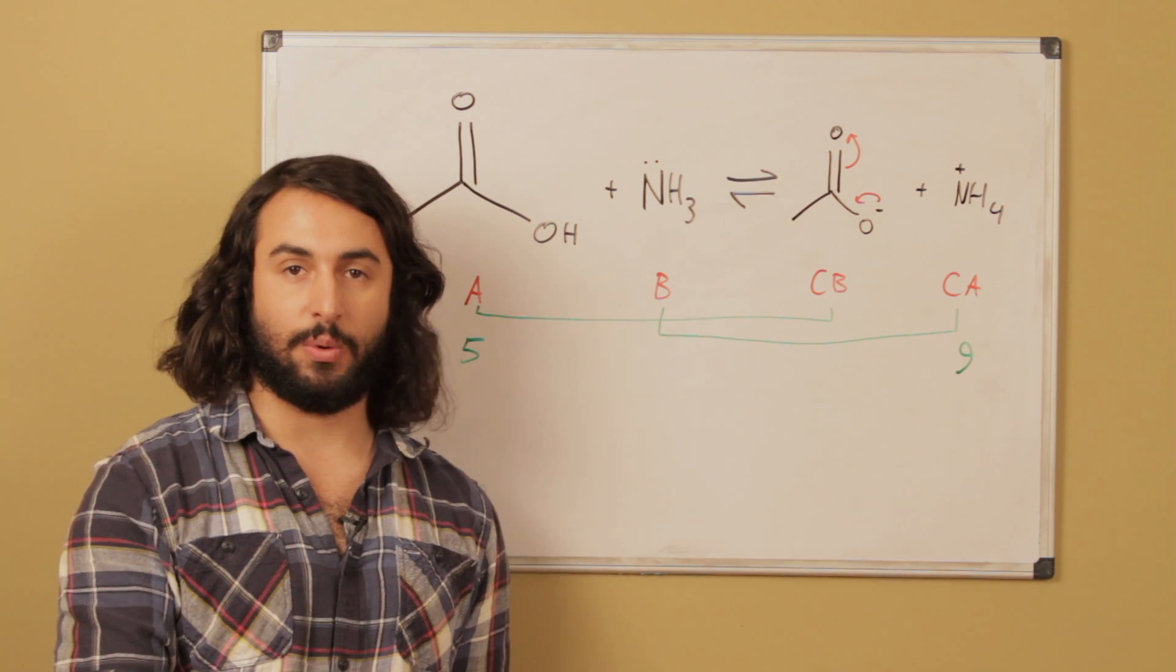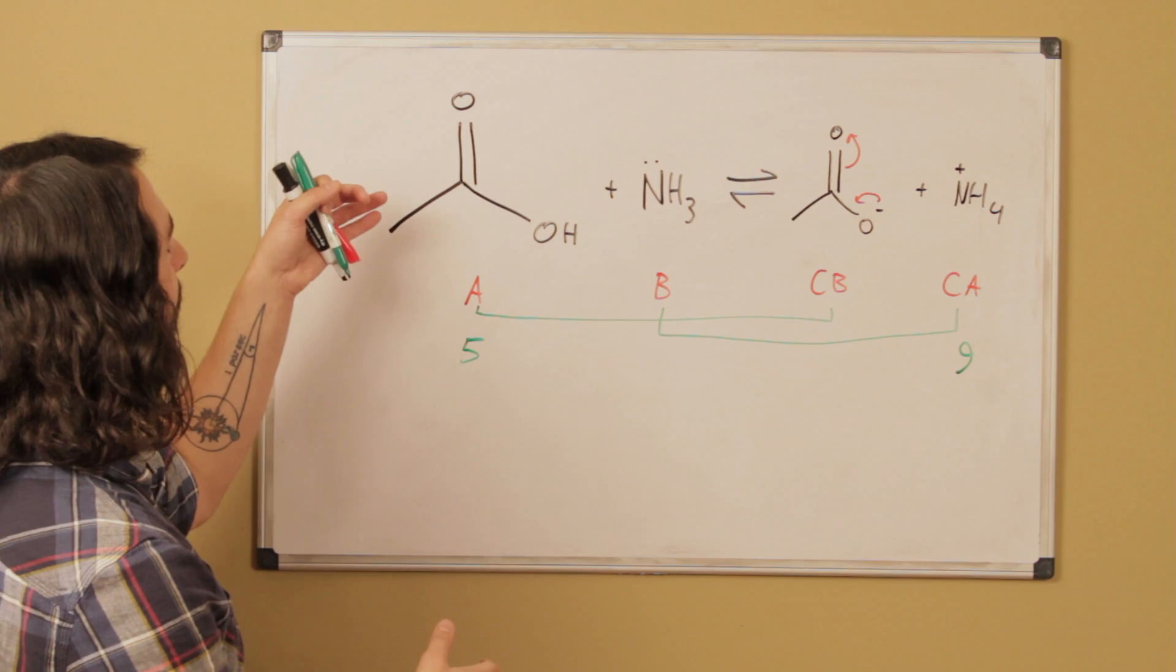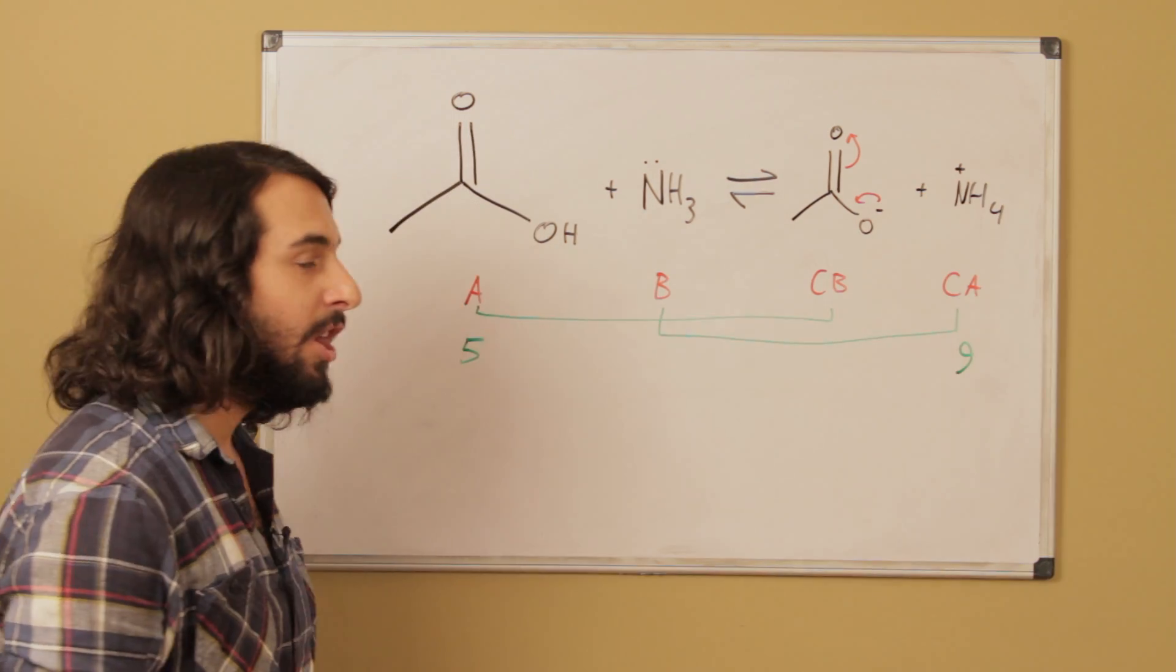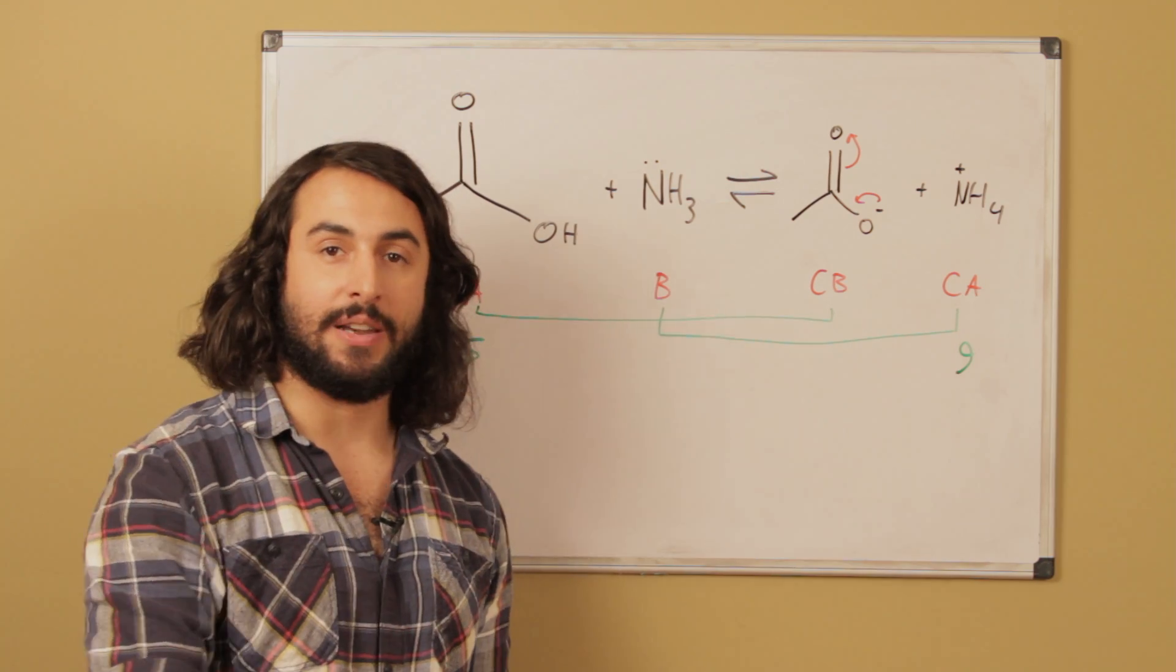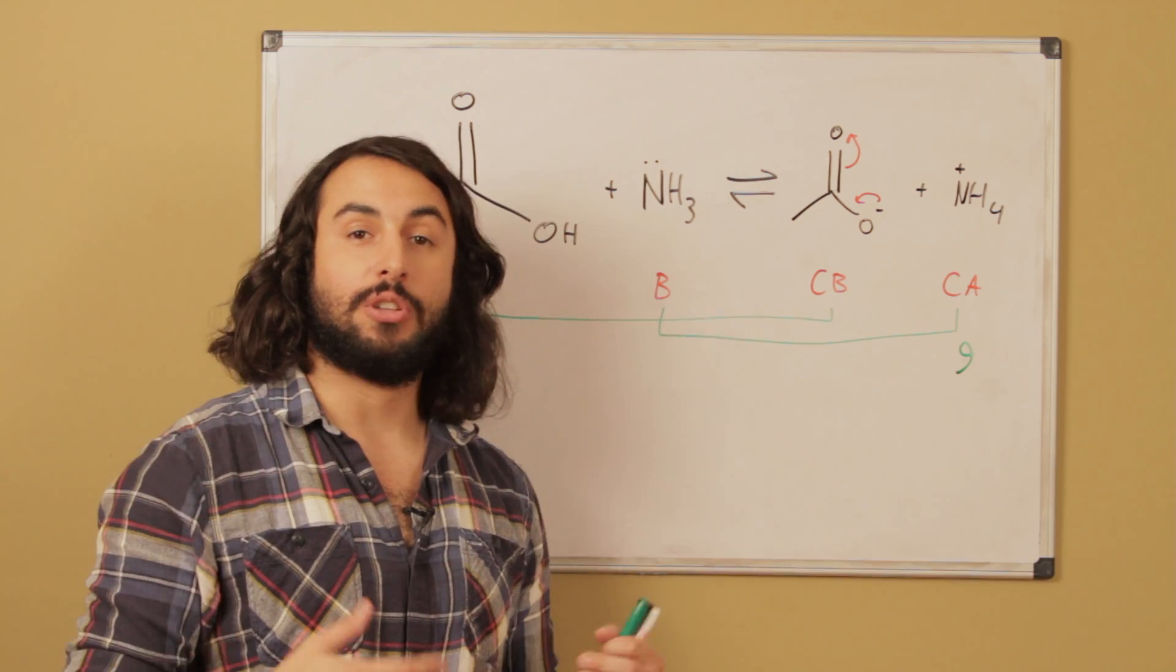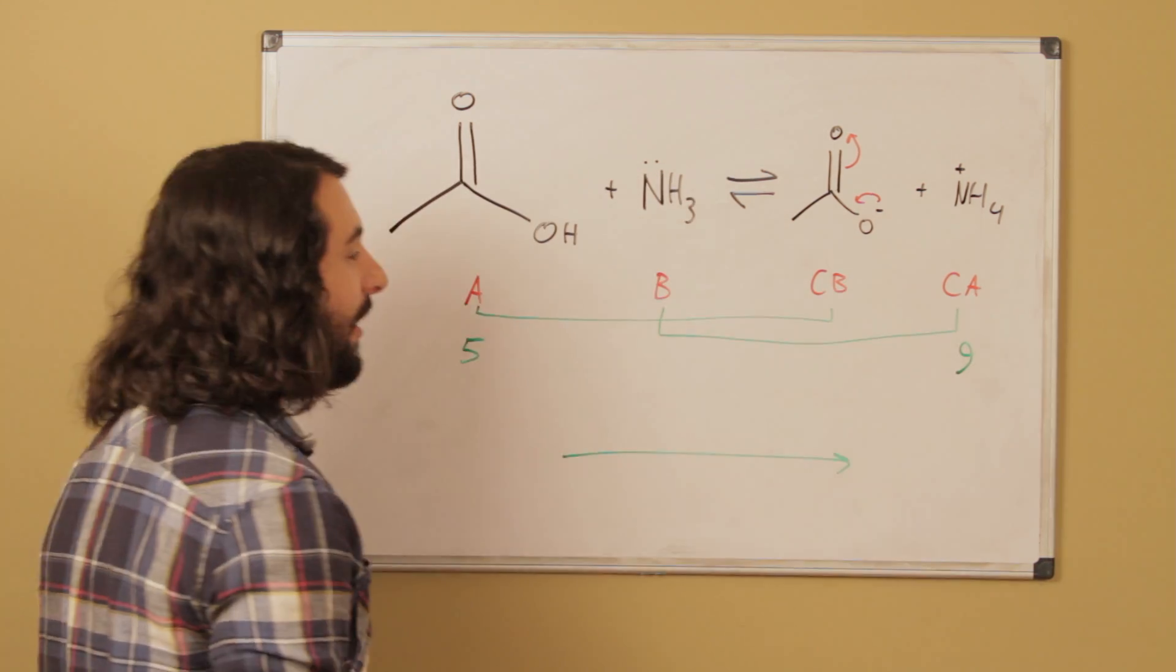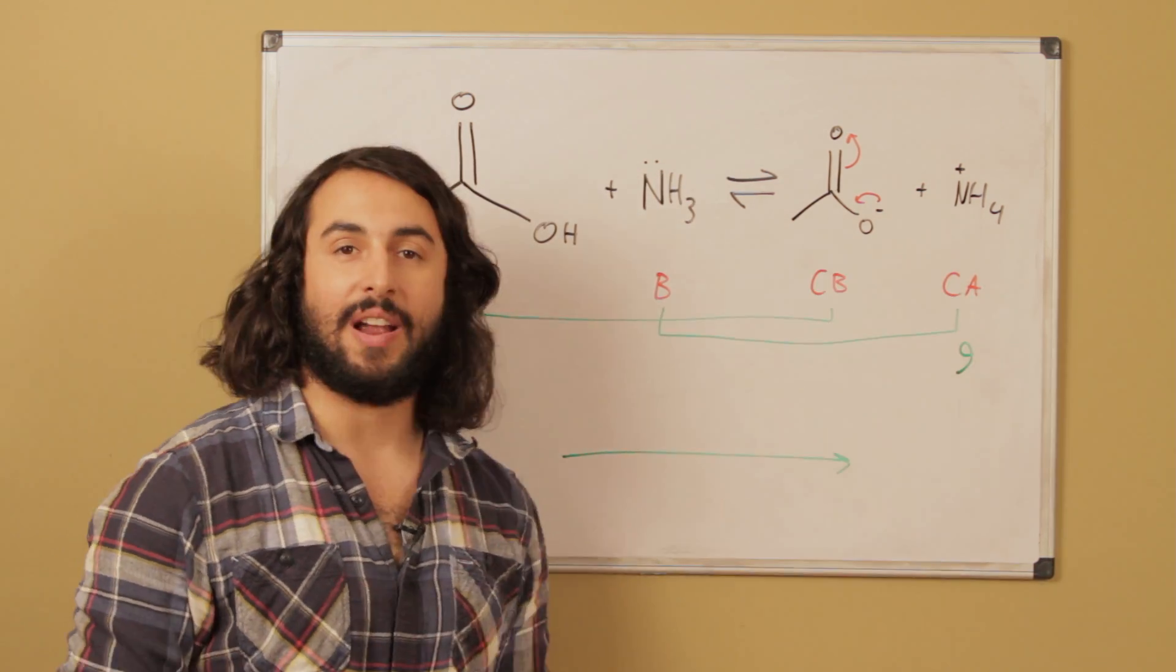If we're comparing an acid with pKa 5 and an acid with pKa 9, the stronger acid gets rid of its proton better than the weaker one. That means we're going to favor this side because it is the side with the weaker acid. It has less of a tendency to give up its proton than the stronger acid.